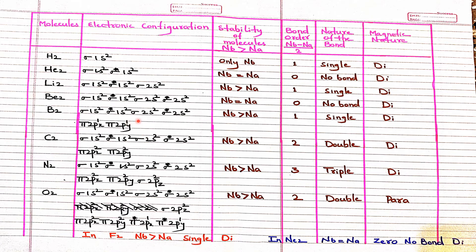In the case of boron B₂ with 10 electrons, the π2px and π2py orbitals have equal energy. According to Hund's rule, since these two are degenerate orbitals, each takes one electron: π2px has 1 electron and π2py has 1 electron. Therefore B₂ has two unpaired electrons and is actually paramagnetic.